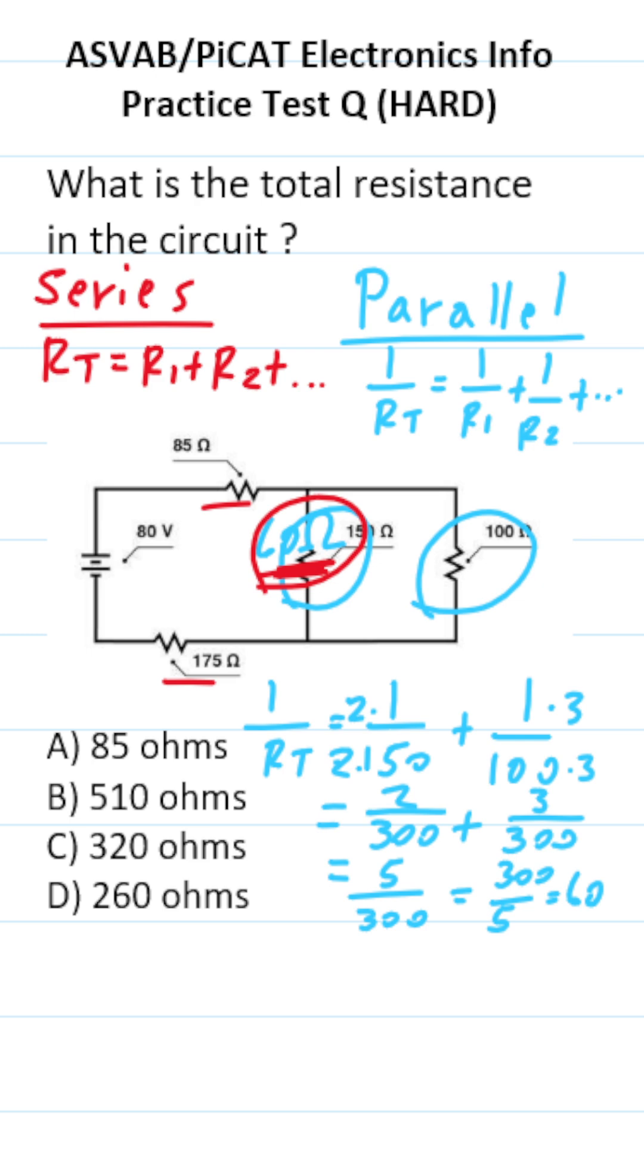So we can actually use this formula now to calculate total resistance. RT is going to be equal to 85 ohms plus 60 ohms, which we just calculated, plus 175 ohms. I'm not going to do that math in this video. You should be able to do that mentally. That's going to be a total resistance of C, 320 ohms.